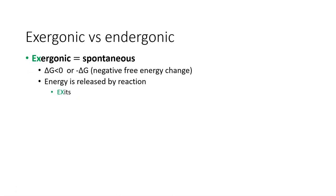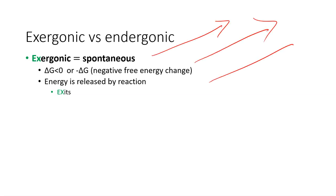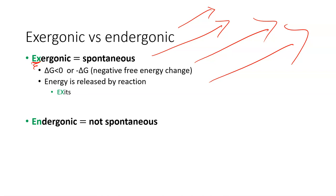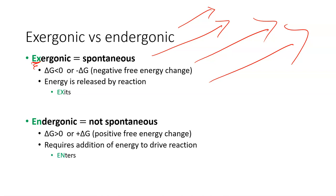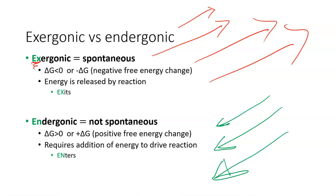Exergonic is any time you see energy exiting — any reaction where ATP or other energy intermediates are leaving or exiting is exergonic. On the flip side, any time energy enters a reaction, we call that endergonic. So whenever energy enters these chemical reactions, that is known as being endergonic.